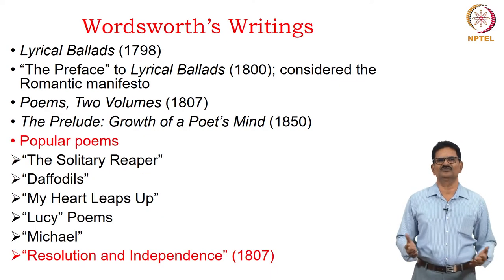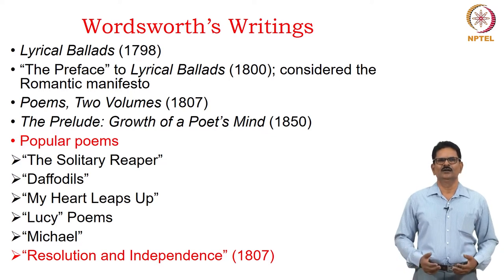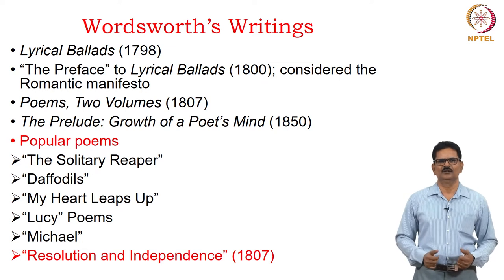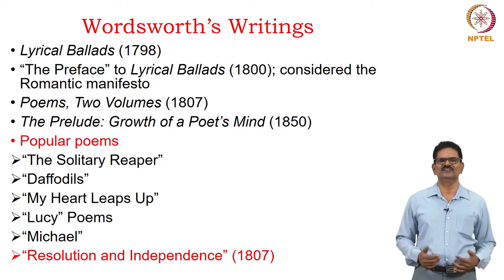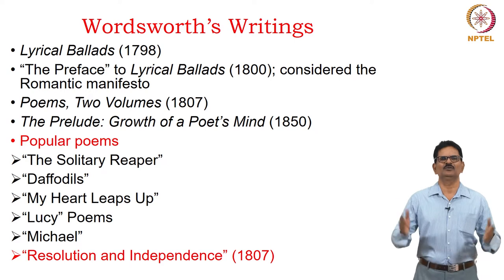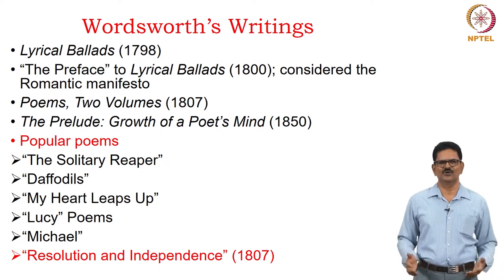Among Wordsworth's many writings, three notable volumes include Lyrical Ballads (1798), reprinted in 1800 with a preface considered the Romantic manifesto of British literature; Poems in Two Volumes (1807); and his magnum opus The Prelude: Growth of a Poet's Mind, published posthumously in 1850 under his wife's guidance. Popular poems include The Solitary Reaper, Daffodils, My Heart Leaps Up, Lucy Poems, Michael, and Resolution and Independence.